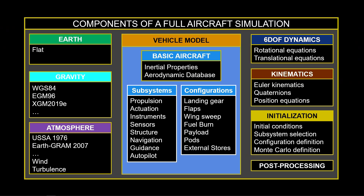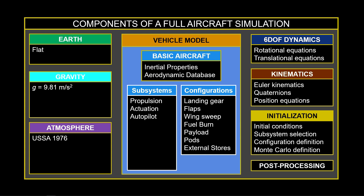The flat earth assumption leads to simpler governing equations. Gravity can be approximated as a constant everywhere. We could use the 1976 atmospheric model, which is just a table lookup. We can limit the subsystems to just the essentials. In fact, we could have no subsystems at all and just explore the aircraft open-loop dynamics. We can focus on a single vehicle configuration.